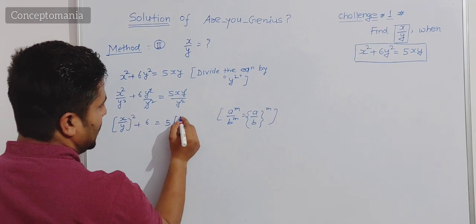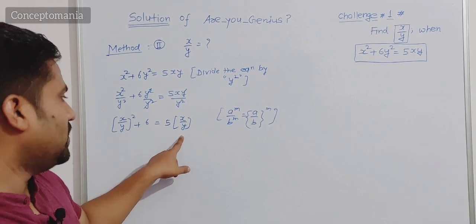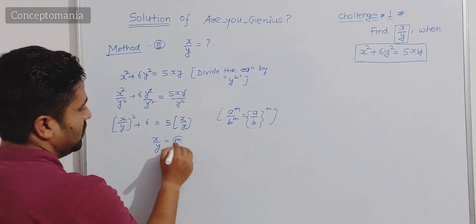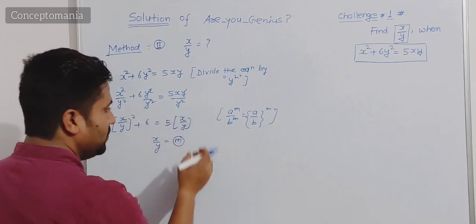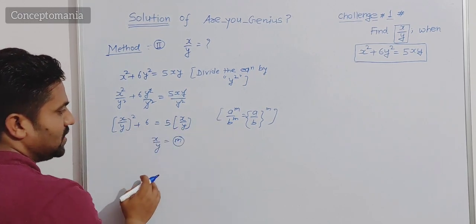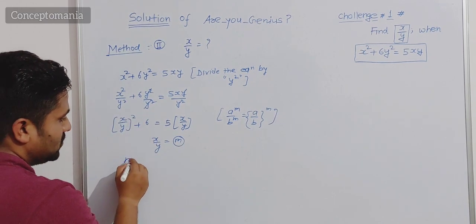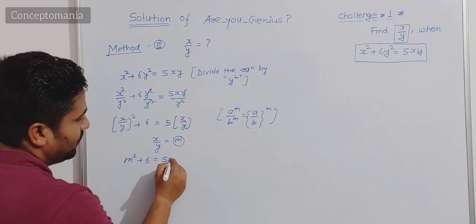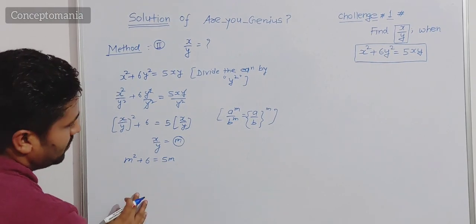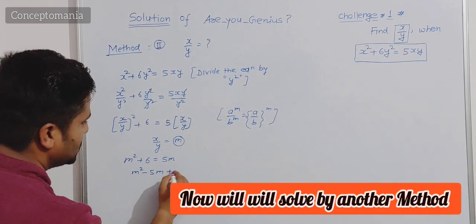And 5xy upon y square gives 5 into x upon y. So easily we get: x upon y whole squared plus 6 equals 5 into x upon y. We consider x upon y as m again. This time there is no y upon x term, so we directly substitute: m squared plus 6 equals 5m. Arranging in standard form: m square minus 5m plus 6 equals zero — the same equation as before.